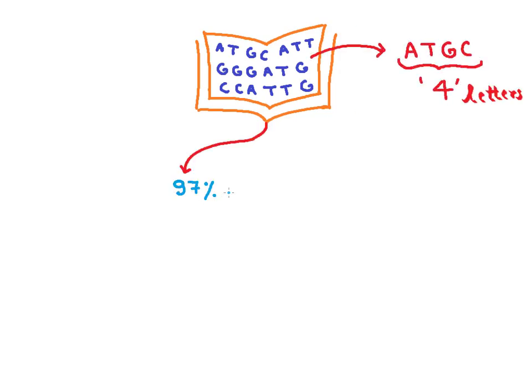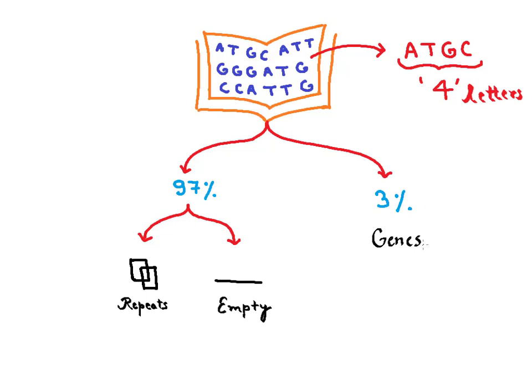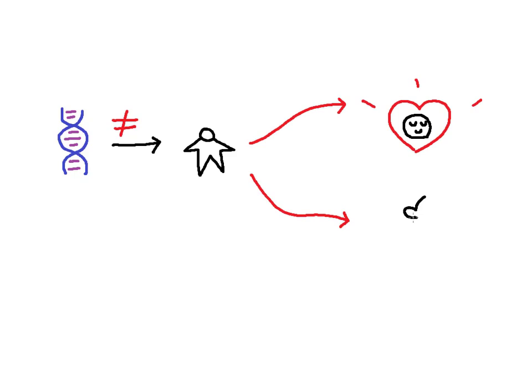We have deciphered our big genetic book consisting of 6 billion letters. Surprisingly only 4 letters. But 97% of the book is filled with repeats or is seen to be empty. Genes make up only 3% of this genetic book. And this is where the challenge of this century lies. To figure out what the rest of the book or 97% of the genetic code does for us. While a gene tells some of what we are, it is also abundantly clear that we are not just a sum total of our genes. It is paradoxical and we need to accept and understand it.